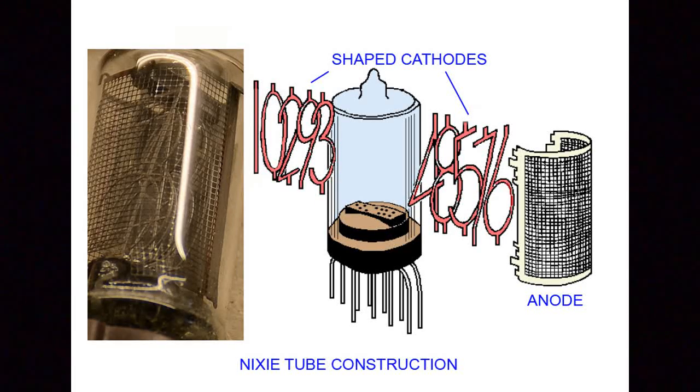The internal construction consists of multiple specially shaped cathodes such as 1, 2, 3, 4, 5, etc., which are surrounded by a mesh-type anode. This assembly is mounted in an evacuated glass housing with some neon and argon gases.